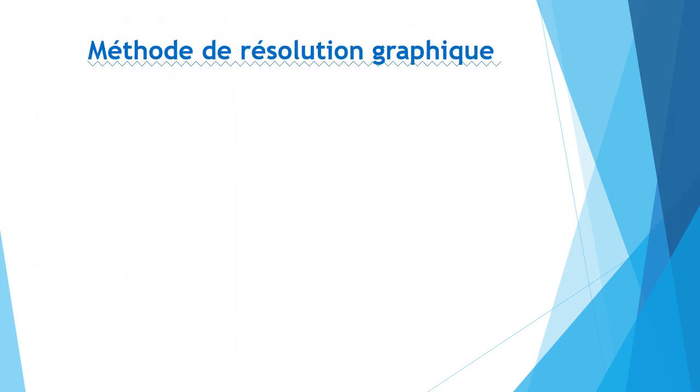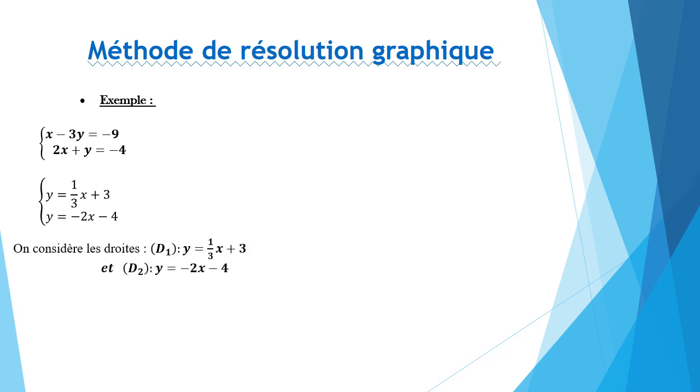Dans cette partie, on vous propose la méthode de résolution graphique. Résolvons le système suivant graphiquement. En exprimant le Y en fonction de X dans chacune des équations, on obtient Y est égal à 1 sur 3X plus 3 et Y est égal à moins 2X moins 4. On prend la droite D1 avec l'équation réduite Y est égal à 1 sur 3X plus 3 et la droite D2 avec l'équation réduite Y est égal à moins 2X moins 4.